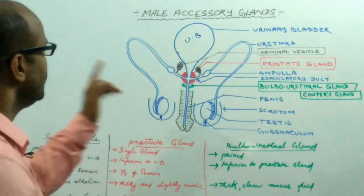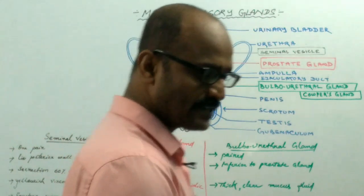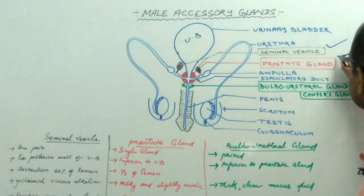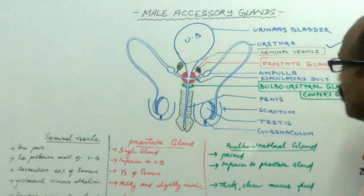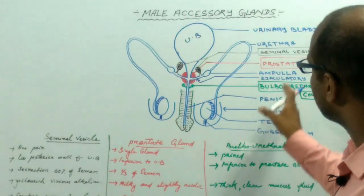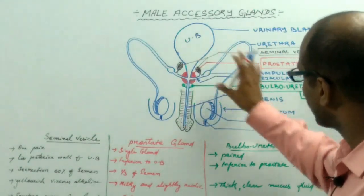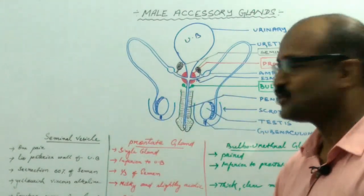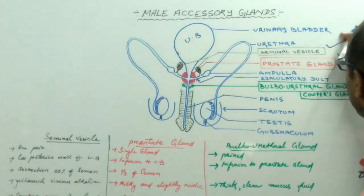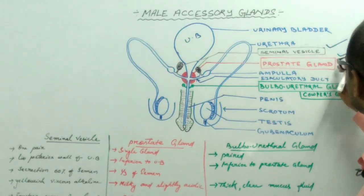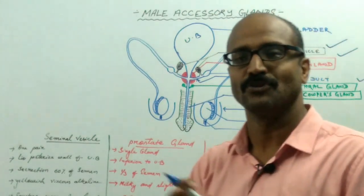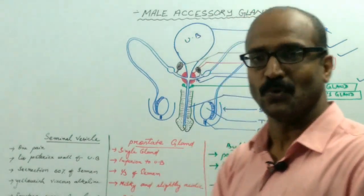In case of humans, the male reproductive accessory glands are three in number. One is the seminal vesicle, the second one is the prostate gland, and the third one is the bulbourethral gland, also known as the Cowper's gland. These glands are present in different locations as you see in this figure. The seminal vesicle is paired — two in number. The prostate gland is unpaired, meaning it is a single gland, and the bulbourethral gland is also a paired gland.